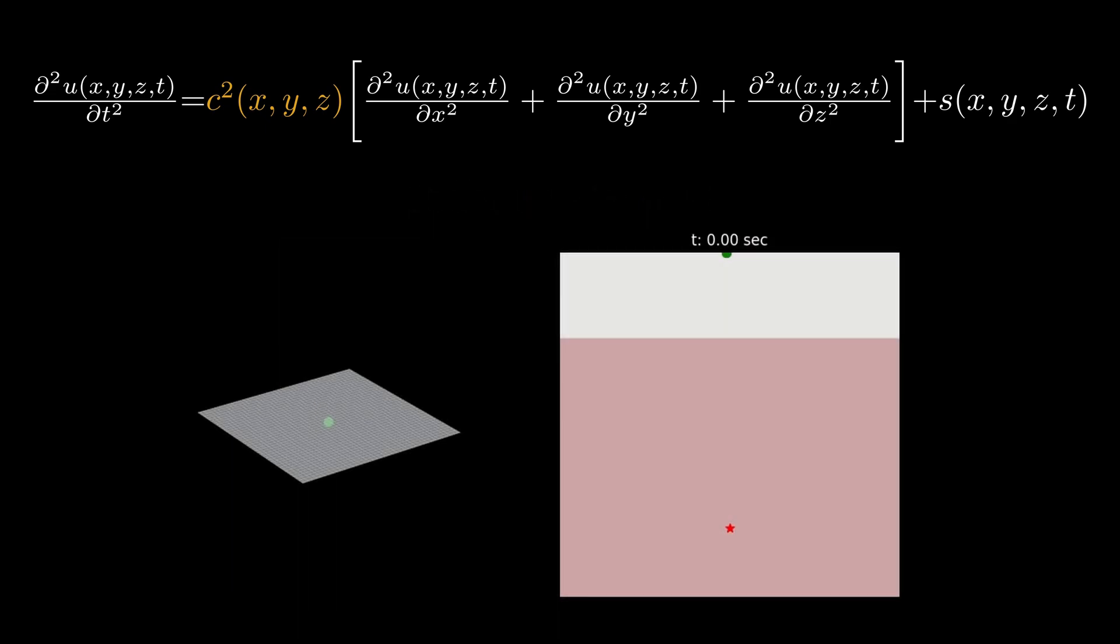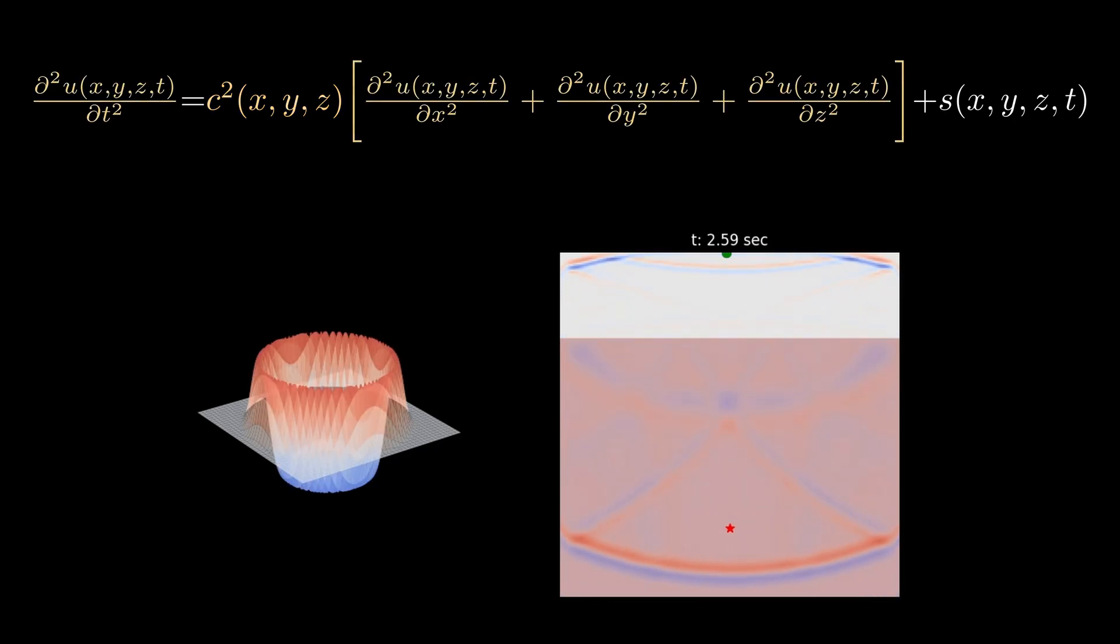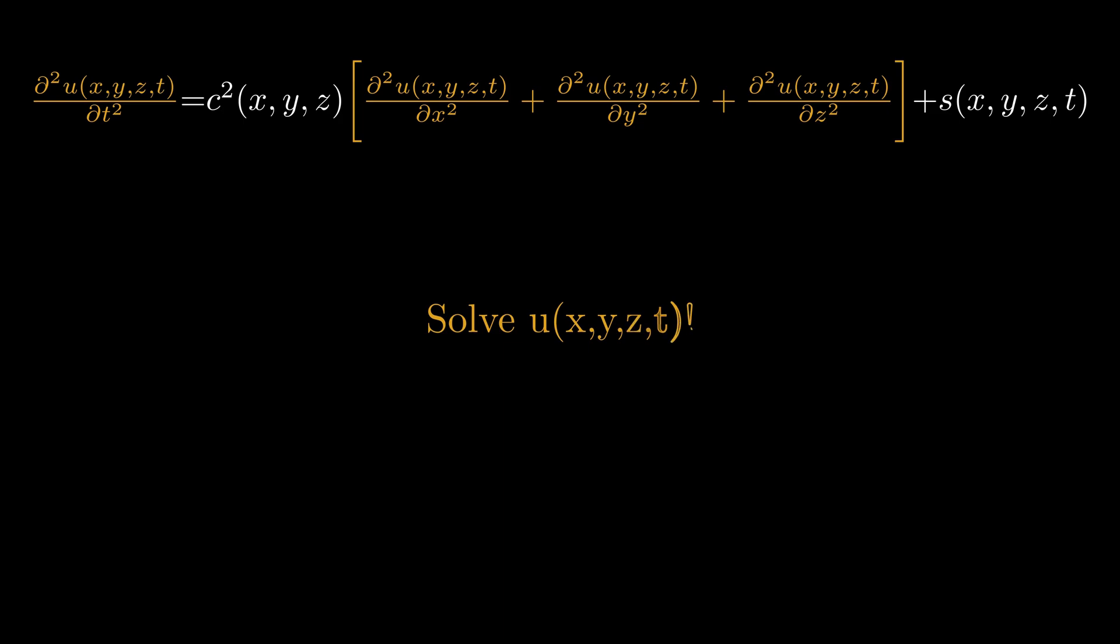I keep talking about the energy released from the source, but what we actually want to resolve is the displacement caused by this. This is denoted using the term U and you can see these displacements a bit better at the surface. So in short, the entire simulation is all about solving for U given the source and the medium velocity.